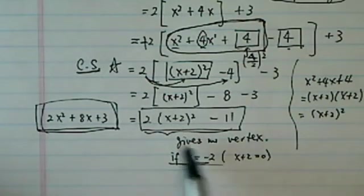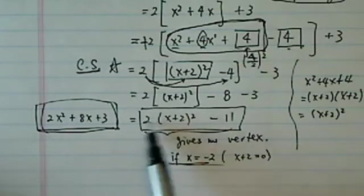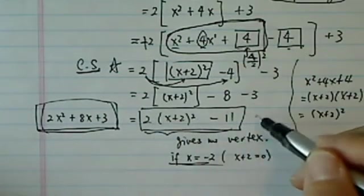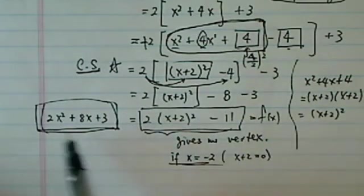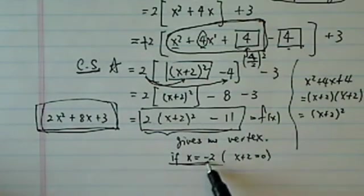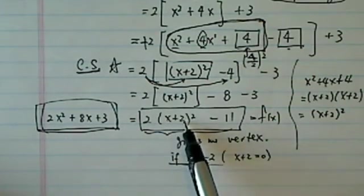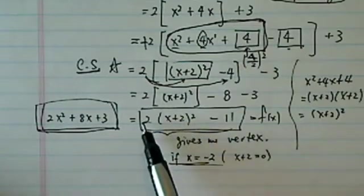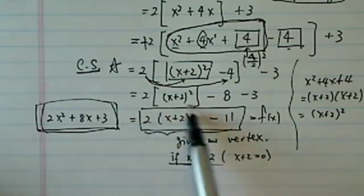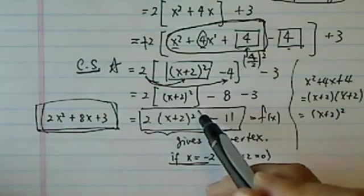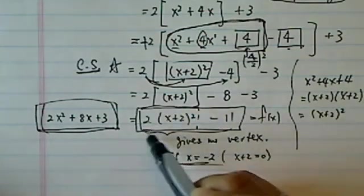If x equal to minus 2, then you can see this function here that we're working with. This is our original function. We have two different forms. If x equal to minus 2, if you substitute it in there, something magic happens. This whole chunk becomes 0. This whole chunk here becomes 0.